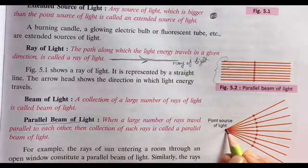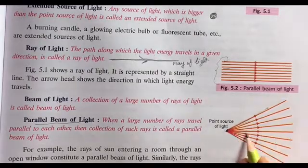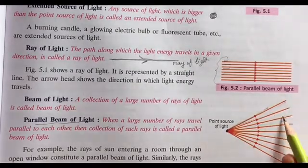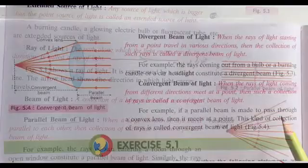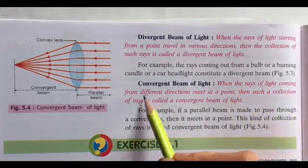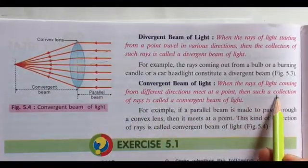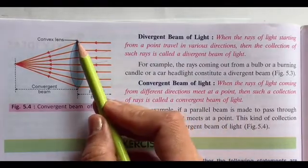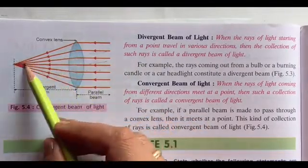After parallel, there is convergent and divergent beam of light. Divergent beam of light is originating from a point source and moving in all directions. You can see it is generated at this point and it is moving away in all directions. Moving away in all directions is your divergent beam of light. Reverse of divergent is convergent beam of light, when rays of light are coming from different directions - look, they are coming from different directions and meeting at a point. The collection of such rays is called convergent beam of light. In this we use convex lens. What does convex lens do? Rays coming from different directions are collected at a point. That is called convergent beam of light.